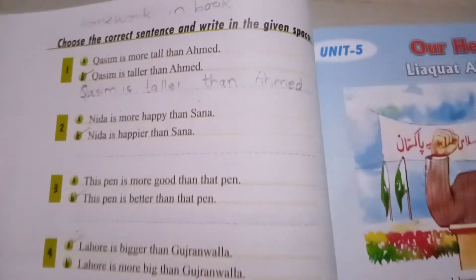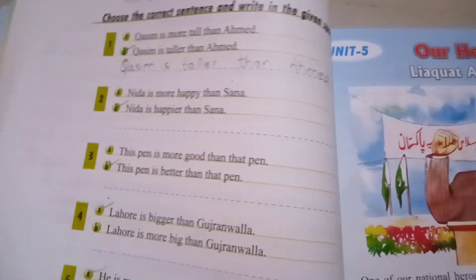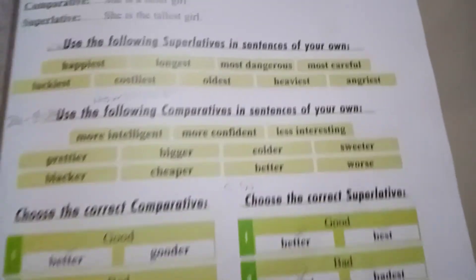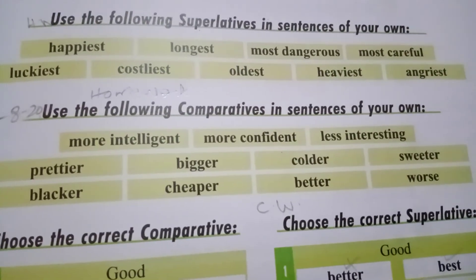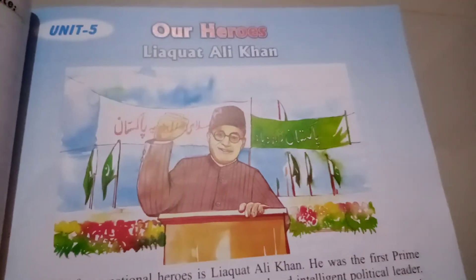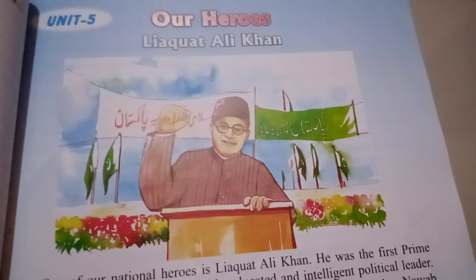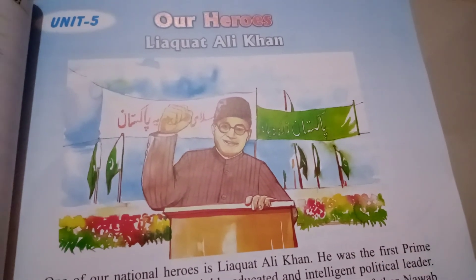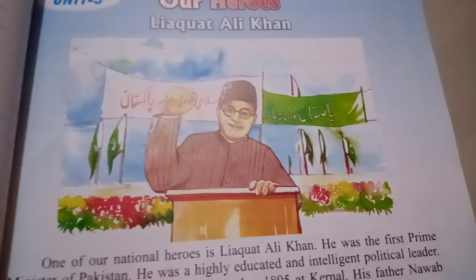You have to do page number 24 in the book, and from the five sentences I have shared, you have to make comparative sentences in your copies. You will also read this chapter, 'Our National Hero, Liaquat Ali Khan.' We will discuss the comprehension about it in the next class. Thank you very much.